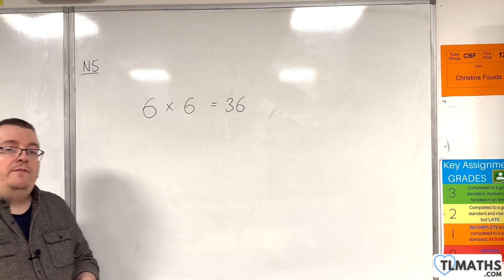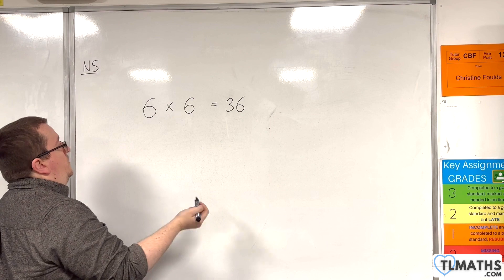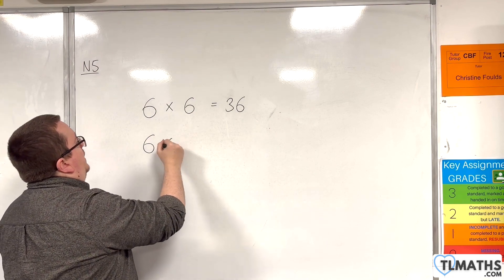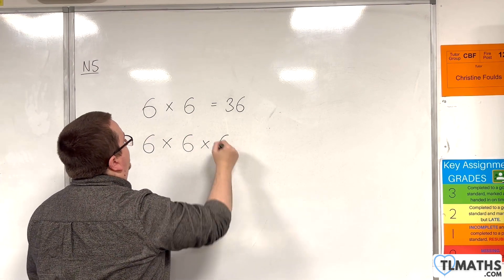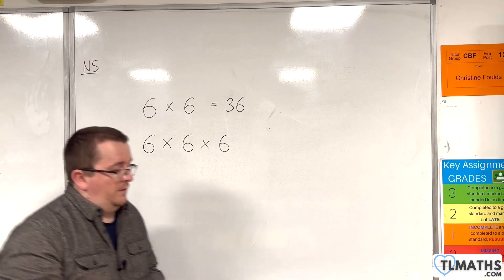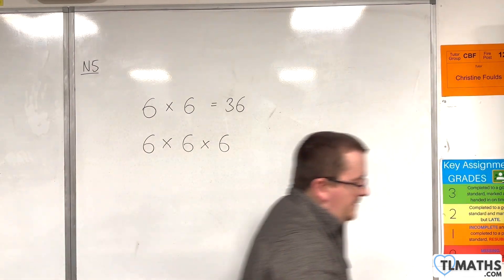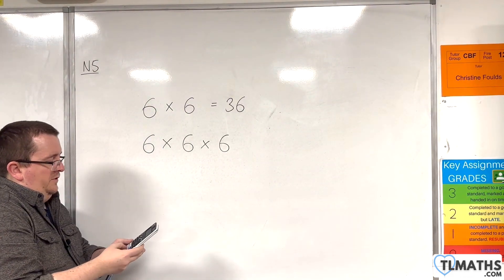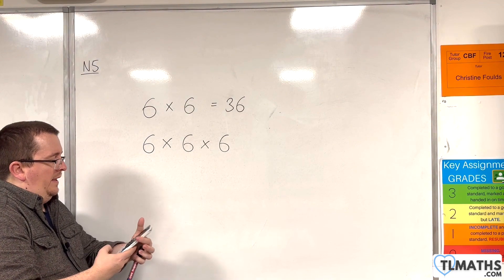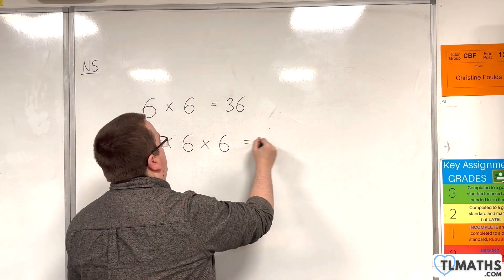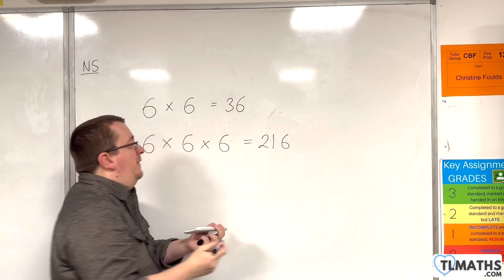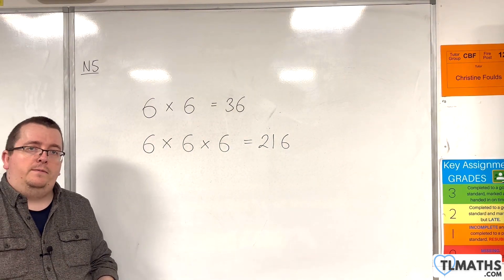And if I had three dice, then it would be six times six times six. So, don't know that one off the top of my head. So, six times six times six is 216. So, there would be 216 possible options there.